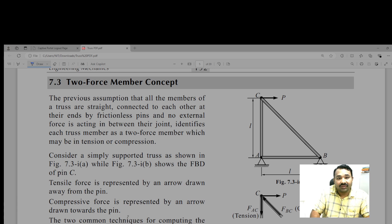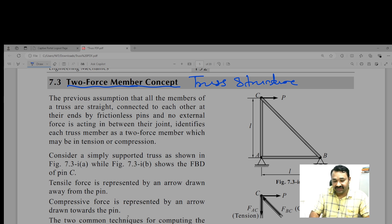Dear friends, once again welcome. We are talking about the truss structure in which two force member concept. So why a member is subjected to two forces and why it is called as two force member? Here with the help of this figure, this is the truss structure and at the ends A and B two supports are there. At A hinge support is there, at B roller support is there.